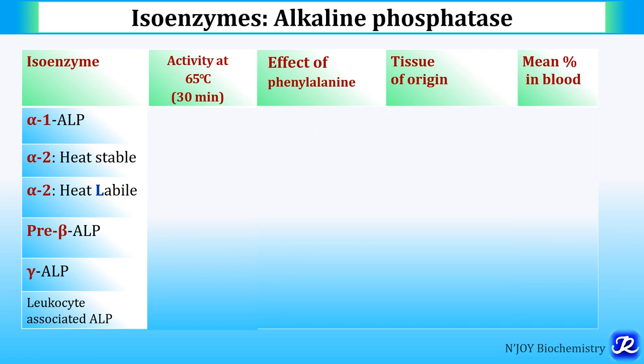Alkaline phosphatase has 6 isoenzymes: Alpha-1, Alpha-2 heat stable, Alpha-2 heat labile, Pre-beta, Gamma, and Leukocyte-associated alkaline phosphatase.